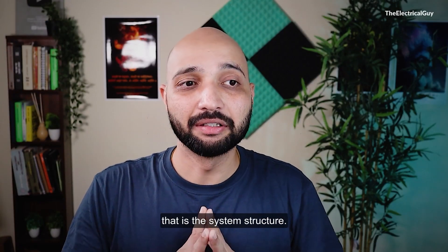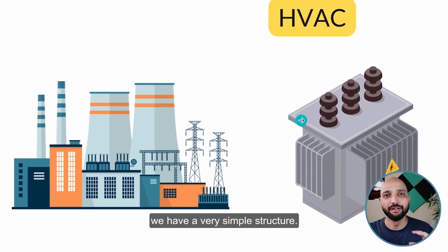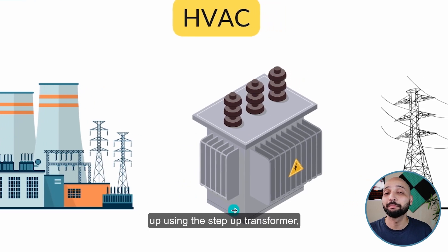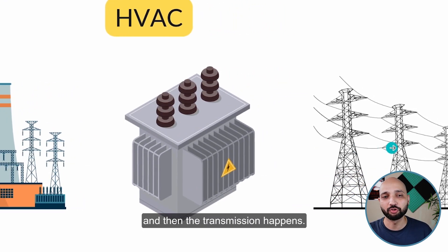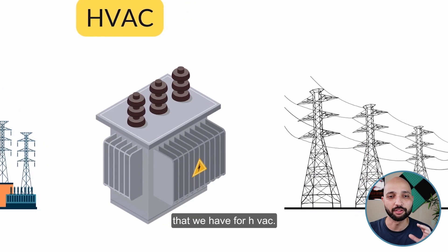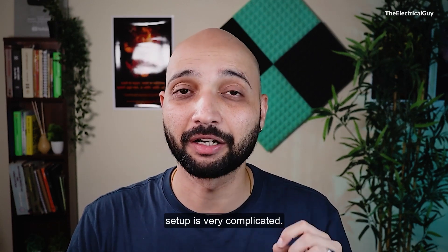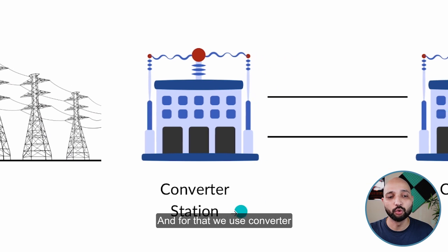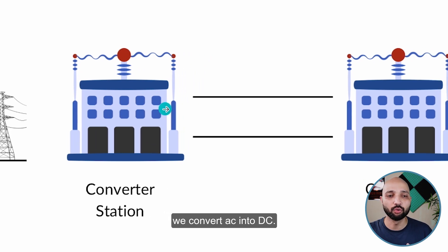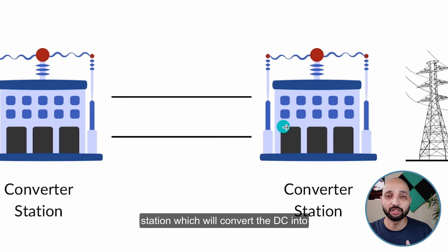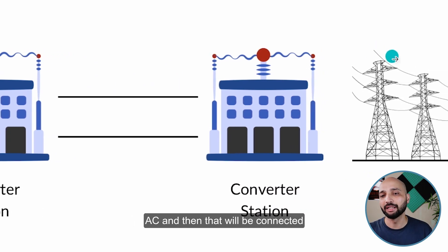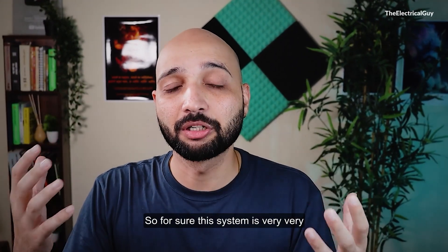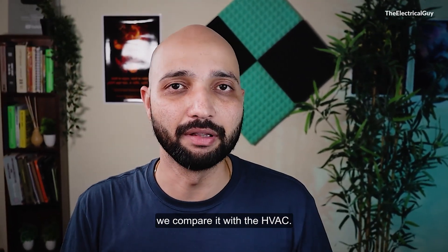Moving on to the next parameter: system structure. In the HVAC system, the structure is very simple — power plants generate electricity at lower voltage, which is stepped up using a transformer and then transmitted. But for HVDC, the setup is very complicated. The incoming AC power must first be converted to DC using converter stations, then transmitted, then converted back to AC at the other end before connecting to AC transmission towers. This system is very, very complicated compared to HVAC.